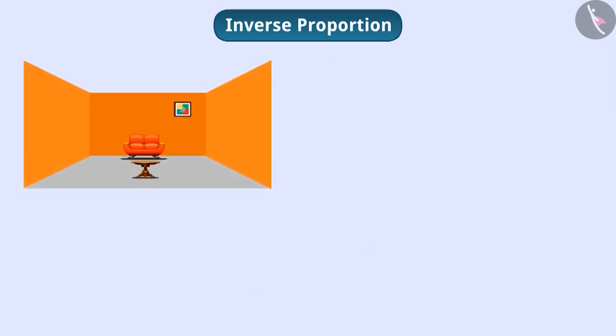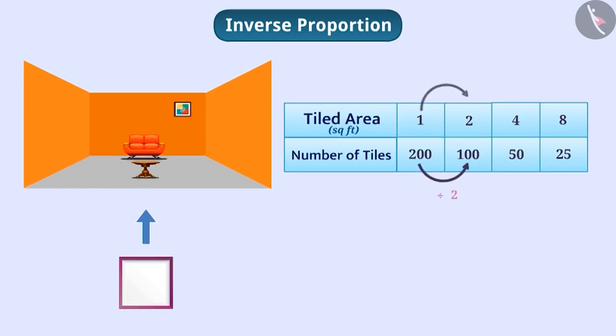If square tiles are to be installed in a certain area, there will be a proportionate decrease in the number of tiles with an increase in the area of tiles. In this way, the area of tiles and the number of tiles will be inversely proportional.